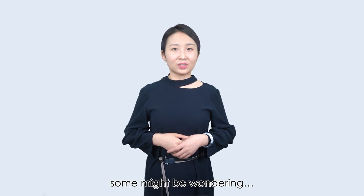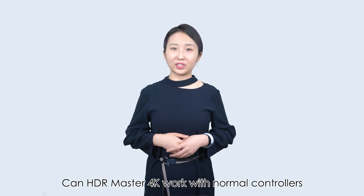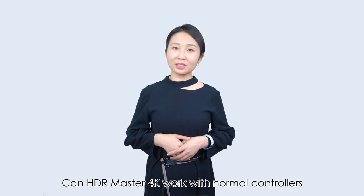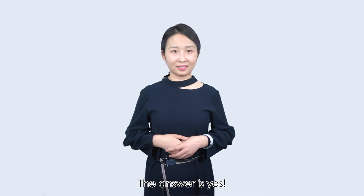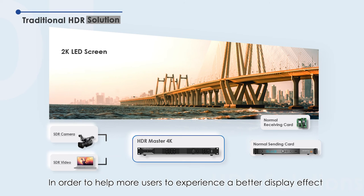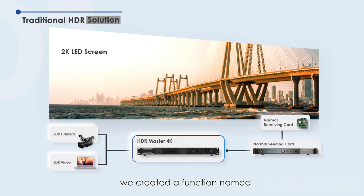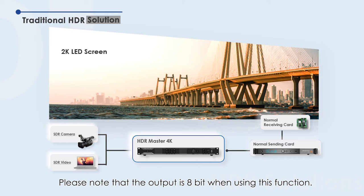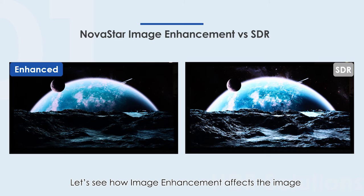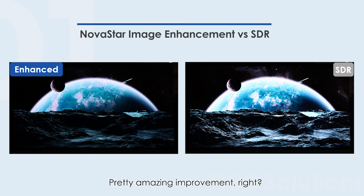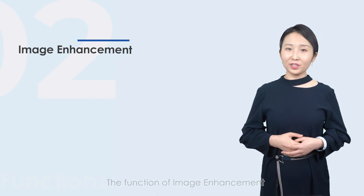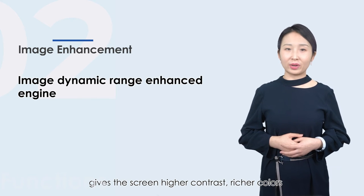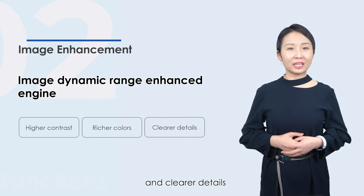After seeing this great result, some might be wondering: can HDR Master 4K work with normal controllers and receiving cards? The answer is yes. In order to help more users experience a better display effect, we created a function named Image Enhancement, which can allow any LED screen to have an HDR effect. Please note that the output is 8-bit when using this function. Let's see how Image Enhancement affects the image — pretty amazing improvement, right? The Image Enhancement function gives the screen higher contrast, richer colors, and clearer details.